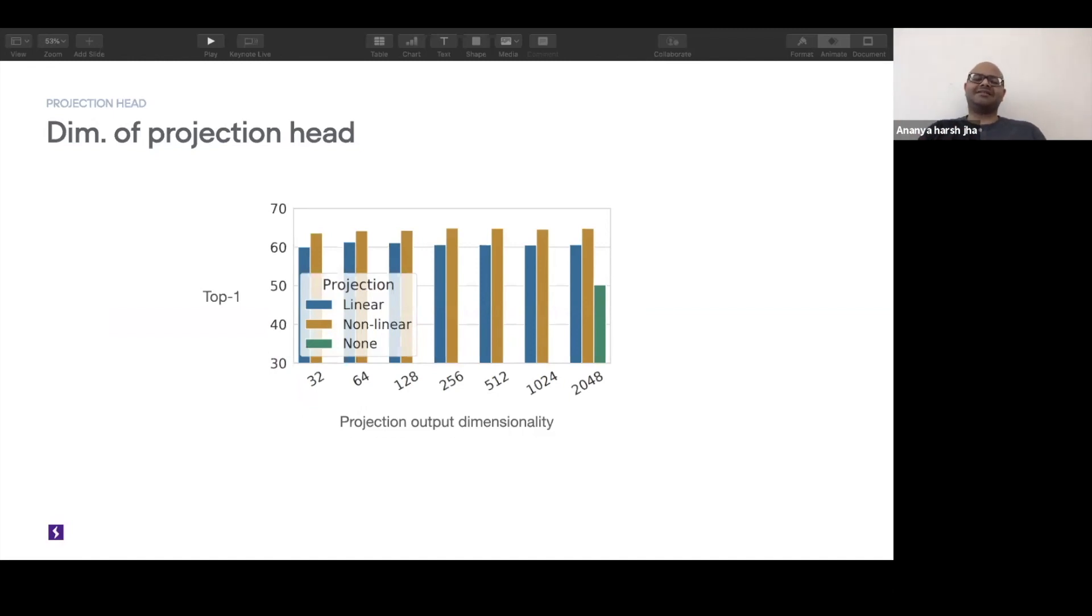What's interesting is that the authors have also tested directly applying the contrastive loss to h here. That's your none case. So that h is 2048 dimensional. And that strictly performs - again, the performance is much worse than any other case.